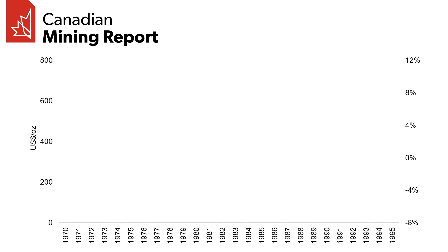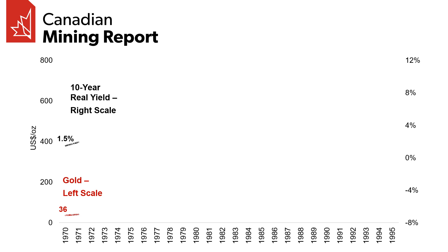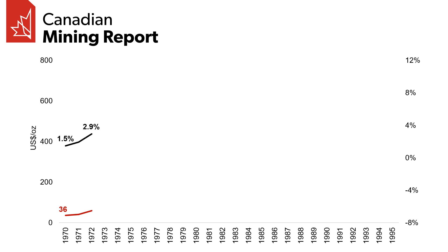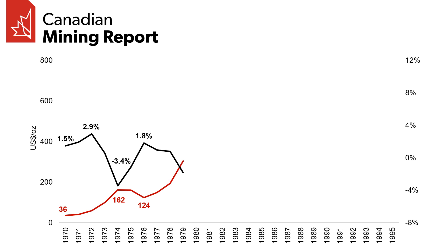Now we can go further back in history to compare real bond yields to the gold price and see what this relationship looks like over a much longer period of time. Starting from the early 1970s, the US goes off the gold standard, which had seen the gold price roughly fixed in terms of US dollars. Inflation starts to pick up by the mid-70s because of this, driving the real yield negative, and we see our first big rise in gold from $36 per ounce to $162 per ounce by 1974. There is a brief rise in yields through to 1976 and a corresponding decline in the gold price, and then because of a second inflation shock yields again go negative and the gold price jumps to $615 per ounce.